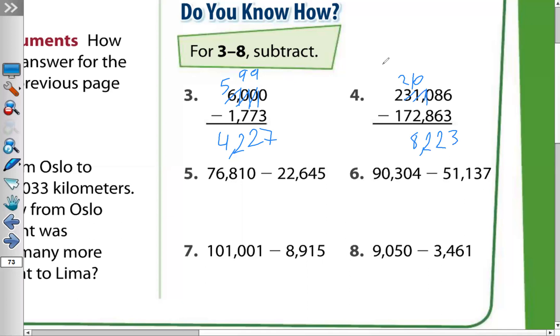Then 2 minus 7, I can't do it because 2 is less. I will take one from the next. The next is 2, becomes 1. This 2 becomes 12. 12 minus 7 equals 5. Then 1 minus 1 equals 0. No need to write the 0 on the left because it has no value. So the answer is 58,223.